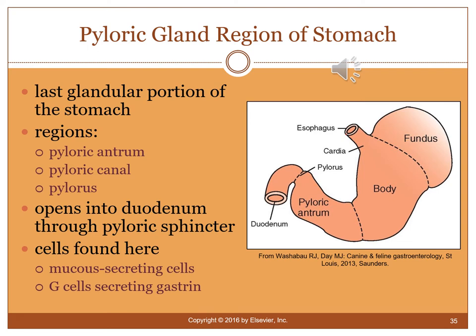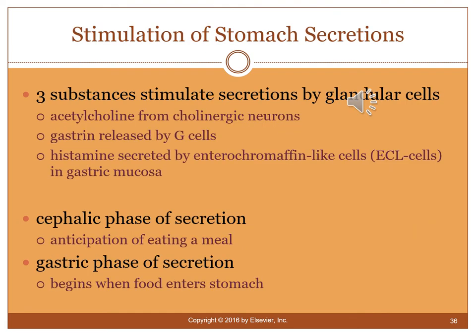The pyloric gland region includes the pyloric antrum, pyloric canal, and pylorus. The pylorus attaches the stomach to the small intestine via the duodenum, opening through the pyloric sphincter. At the other end, the esophagus meets the cardiac sphincter. Cells in this region include mucus-secreting cells and G cells that secrete gastrin.